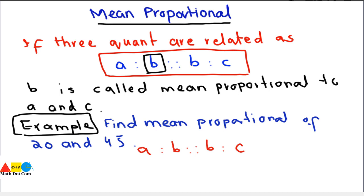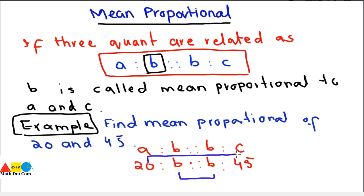The example is: you have to find the mean proportional of 20 and 45. In order to find the mean proportion, you first write it in its standard form, that is A ratio B proportion B ratio C. Here A is 20 and C is 45, and the unknown is B, that is the mean proportion. We apply the rule that the product of means is equal to the product of extremes.